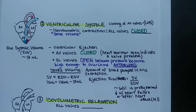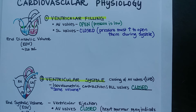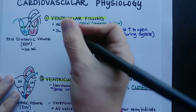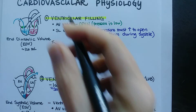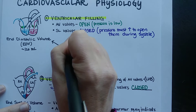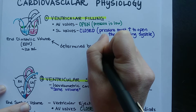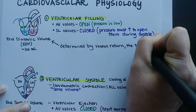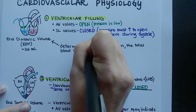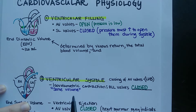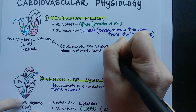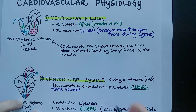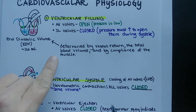What determines end diastolic volume? It is determined by venous return — the rate at which blood comes back to the heart — total blood volume, which is how much blood is available, and compliance, which is the stretchiness of the heart. For example, someone who is exercising has increased venous return because skeletal muscles pump blood back through the circulation.